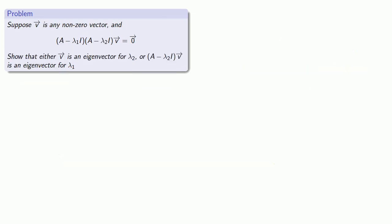So now suppose v is any non-zero vector and we have this matrix equation. Let's show that either v is an eigenvector for λ2 or (A - λ2I)v is an eigenvector for λ1.